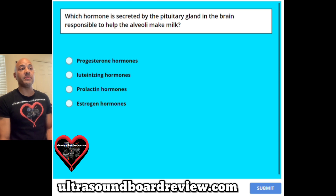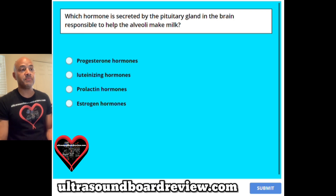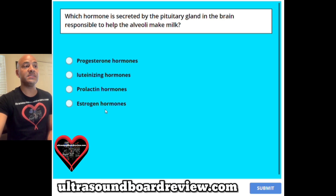Question 19. Which hormone is secreted by the pituitary gland in the brain responsible to help the alveoli make milk? A progesterone hormones, B luteinizing hormones, C prolactin hormones, or D estrogen hormones? The answer is C, prolactin hormones.